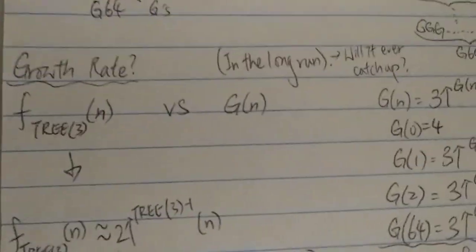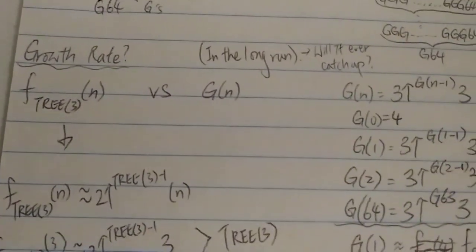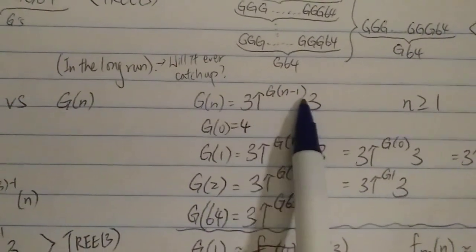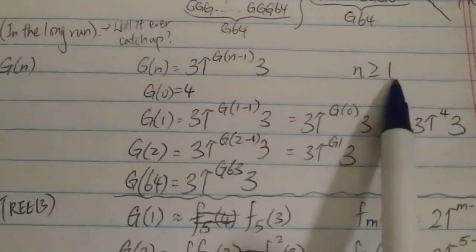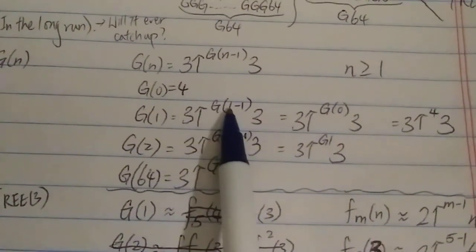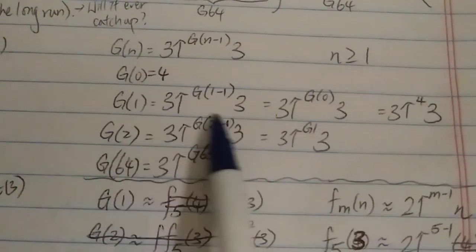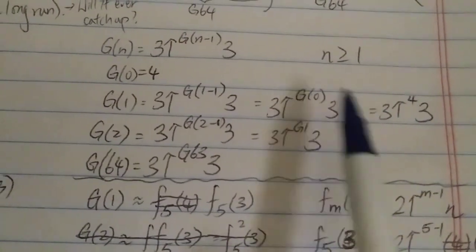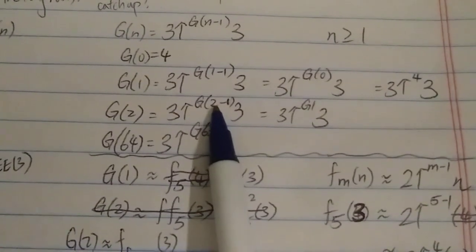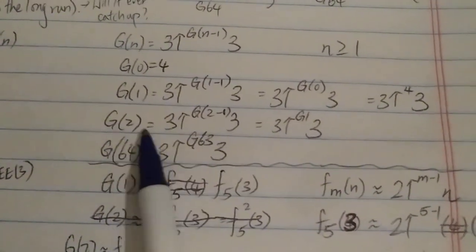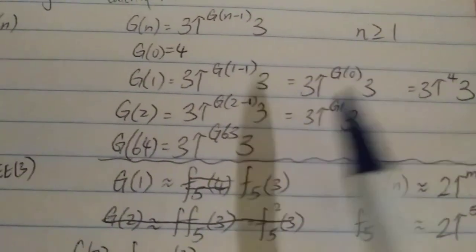Now let's answer the main question. G(n) is defined as: 3 with G(n−1) arrows 3, with G(0) = 4, for n ≥ 1. So G(1) = 3 with G(0) = 4 arrows 3, which is 3↑↑↑↑3. G(2) = 3 with G(1) arrows 3. And G(64) — Graham's number — is 3 with G(63) arrows 3.